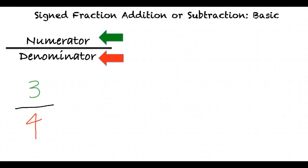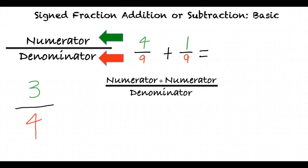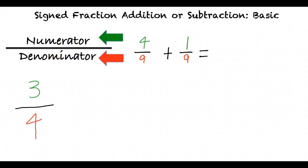In order to add two fractions, the denominators need to be the same. If they are already the same, as in the following example, then to add them, you add the numerators and keep the same denominator. For example: 4 ninths plus 1 over 9 equals numerator plus numerator over the same denominator. For this problem, the answer will be 4 plus 1 over 9. Therefore, the answer is 5 over 9.